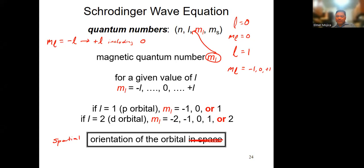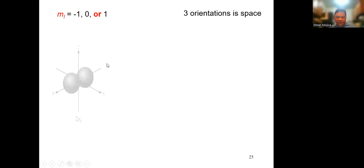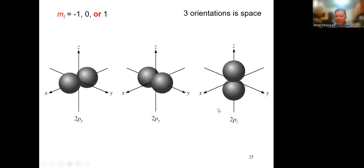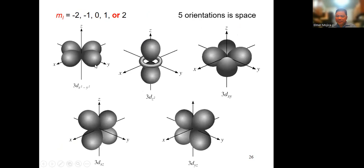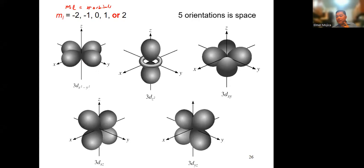Each value of M sub L represents an orbital orientation. For a P orbital where L=1, there are three orientations: 2Px, 2Py, 2Pz. If L=2, you have five orientations. So M sub L gives you the number of orbitals. Once you have the three quantum numbers, you can already tell the location of your electron.